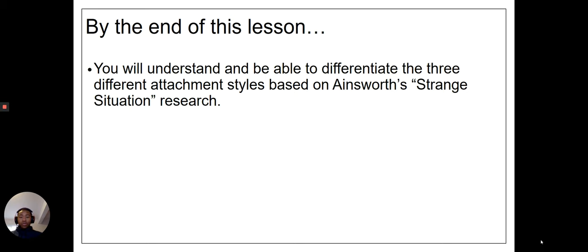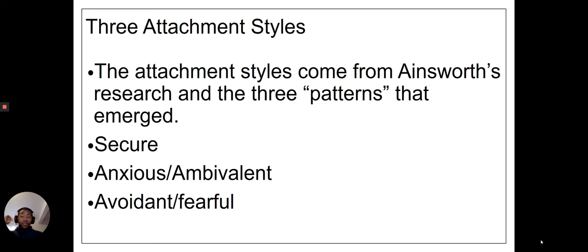These styles are based off of the strange situation research. Ainsworth refers to Mary Ainsworth, who was a student of John Bowlby's. We have three attachment styles coming from this research that Ainsworth did. What's really important is that ability to replicate your findings — we've seen this test done multiple times by different researchers, so we know we can rely on these three different attachment styles. The three are: secure, anxious and ambivalent, and avoidant and fearful.